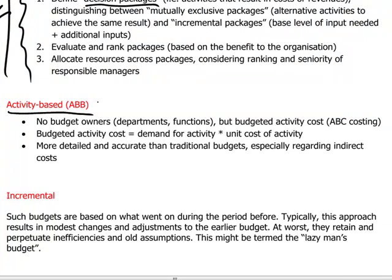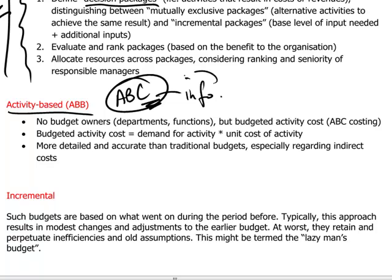Next, we have the activity-based budget, which derives from the familiar ABC system — activity-based costing. Activity-based costing requires an understanding of what drives costs, particularly overhead costs in a production process, or it can be applied to the service industry as well, to identify cost drivers and understand in great detail how costs arise and are driven. With that kind of costing information, activity-based budgeting simply uses ABC-type information for budgeting purposes.